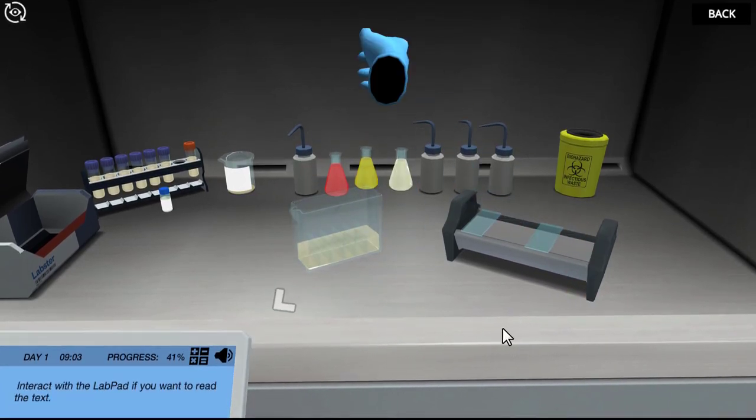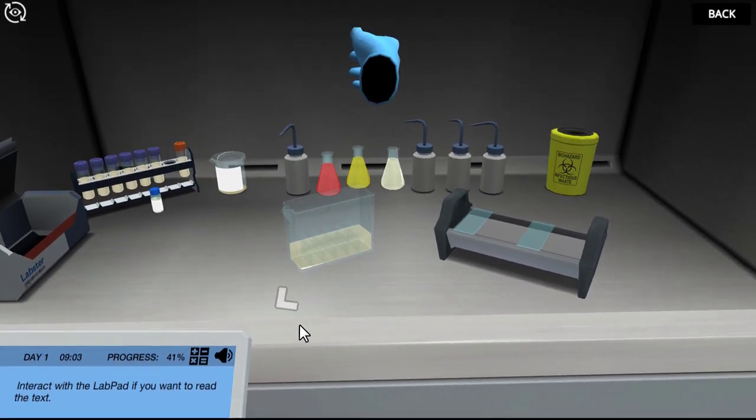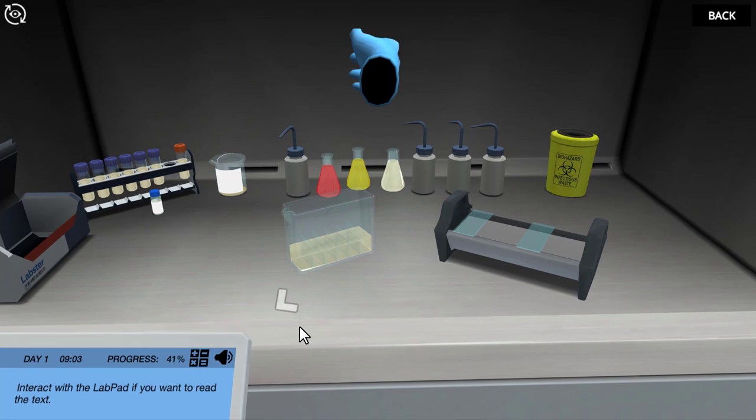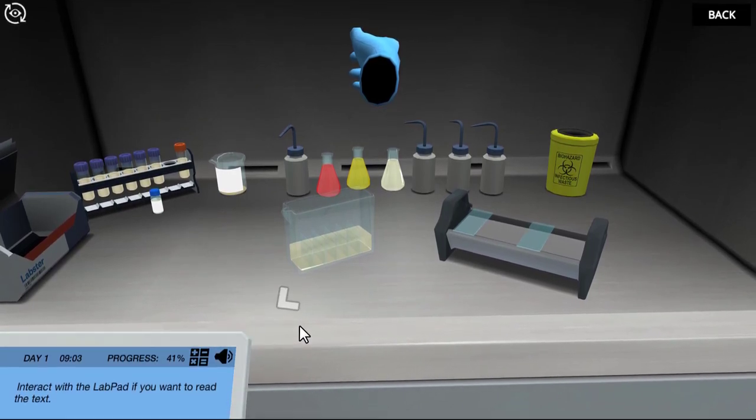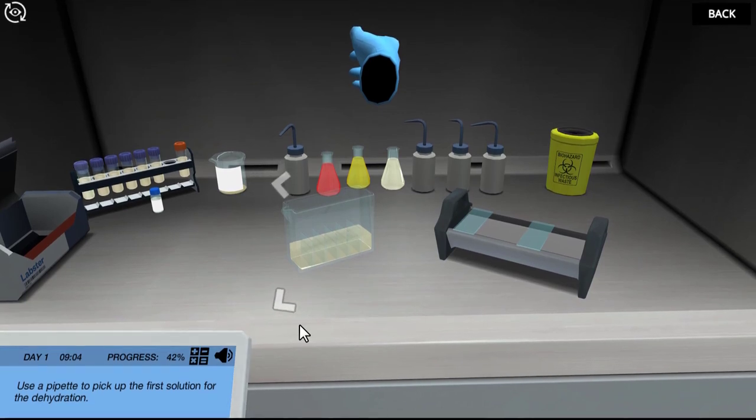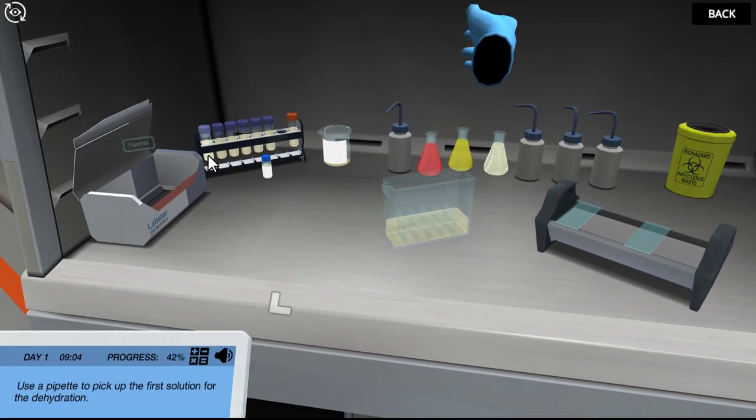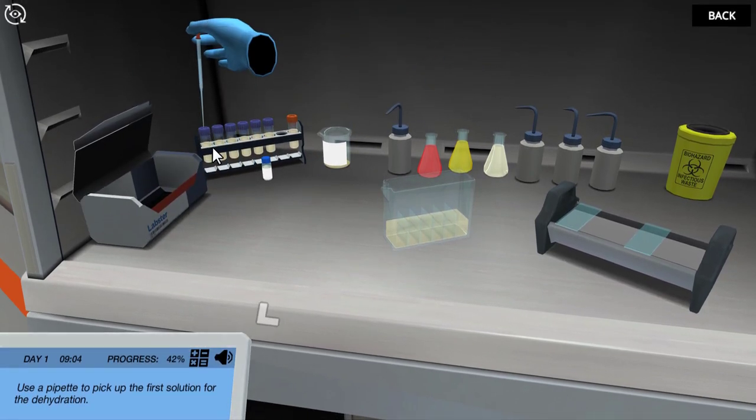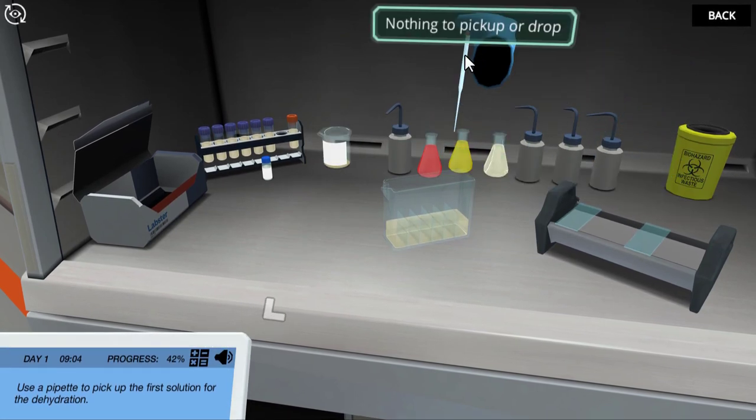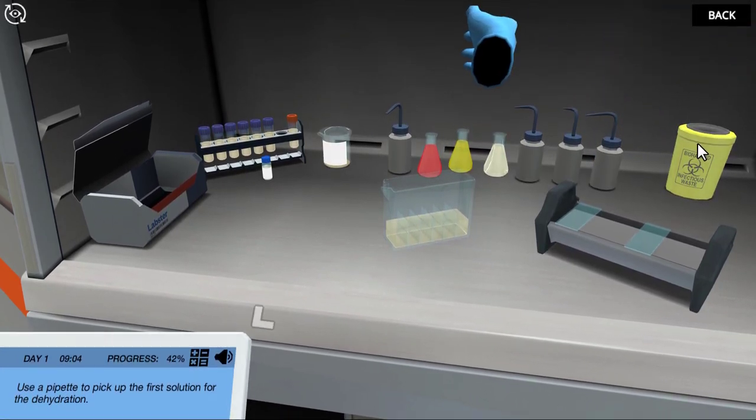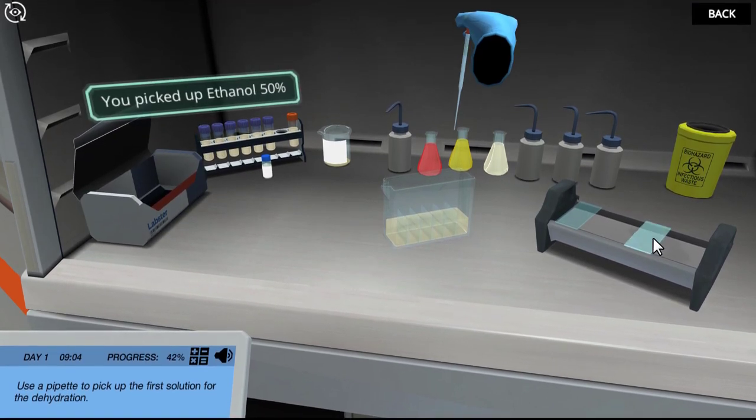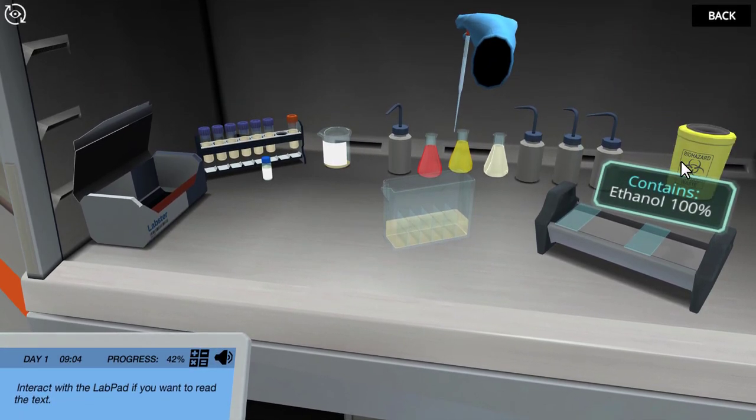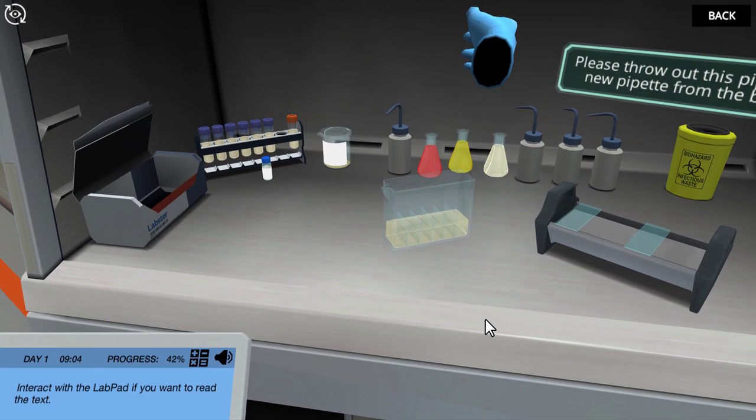Now we need to get rid of the water to create a dry and permanently fixed slide that won't be degraded by oxygenation or bacterial contamination. This is accomplished with an alcohol dilution series from 50% to 100%, and then xylene. Be careful these liquids are highly flammable. Use a pipette to pick up the first solution for the dehydration. I have completed the remaining alcohol dehydration steps. Don't you wish you had a drone for a lab assistant in real life too?